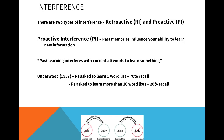This has been tested by Underwood. They got participants to learn a word list of around 20 words and recall it — there was about 70% recall. With another group, they got them to learn the same word list, but first had them learn nine or ten others. What they found was that participants were recalling words from the previous word lists rather than the one they had just read. This suggests proactive interference is happening — old information is having an effect on your ability to recall things you're currently trying to learn.